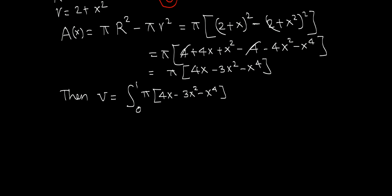Let's find this definite integral. Pi can be pulled outside. The antiderivative of 4x is 4 times x squared over 2, so 2x squared, minus 3 times x cubed over 3, so just x cubed, minus x to the fifth over 5. Now evaluate.